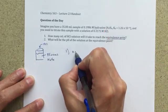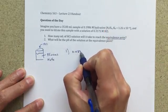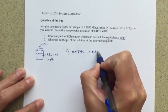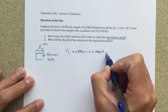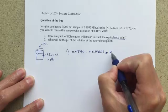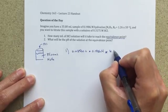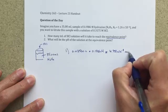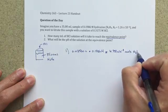So the first thing that I would do is I would say, if we start with 0.03500 liters times 0.1986 molar, moles per liter, of my weak base, that equals 6.951 times 10 to the minus third moles of my N2H4.